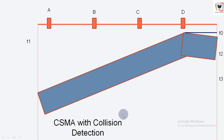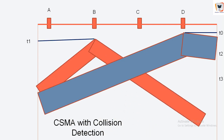The bits propagate at near the speed of light along the broadcast medium. At time T1, greater than T-naught, node B starts sending its frame. Because node B has a frame to send, in accordance with the CSMA protocol, node B is interfering with D's transmission.